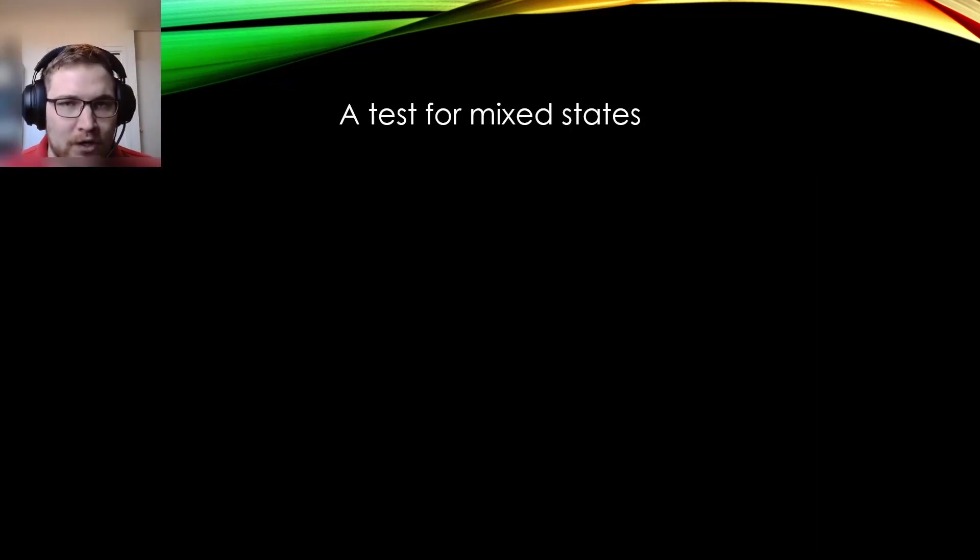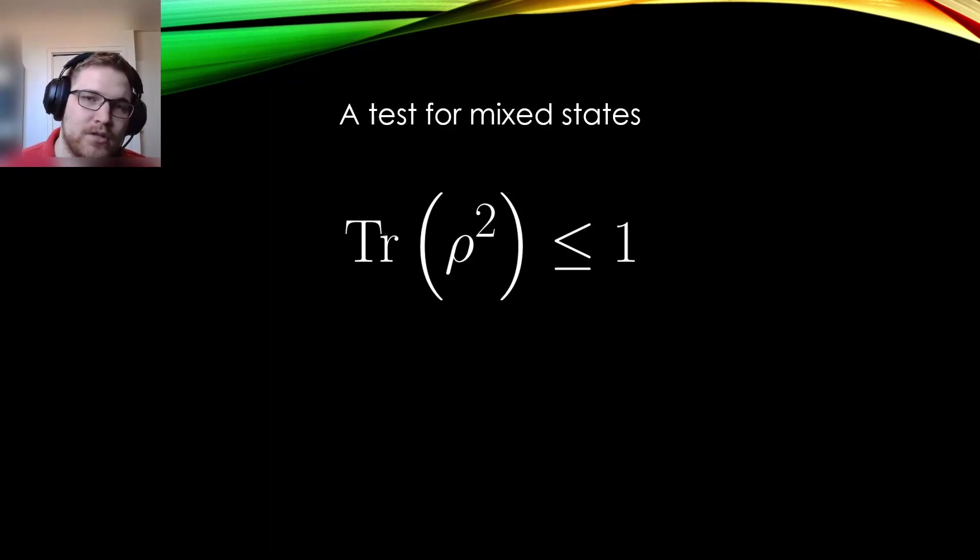So, if I give you a matrix, how would you tell if it's pure or mixed? Mathematically, there is quite a simple way to check. We simply square the matrix and take its trace. If the trace is still 1, we say that the density matrix is pure. If it is less than 1, then we say it's mixed. Simple, right?